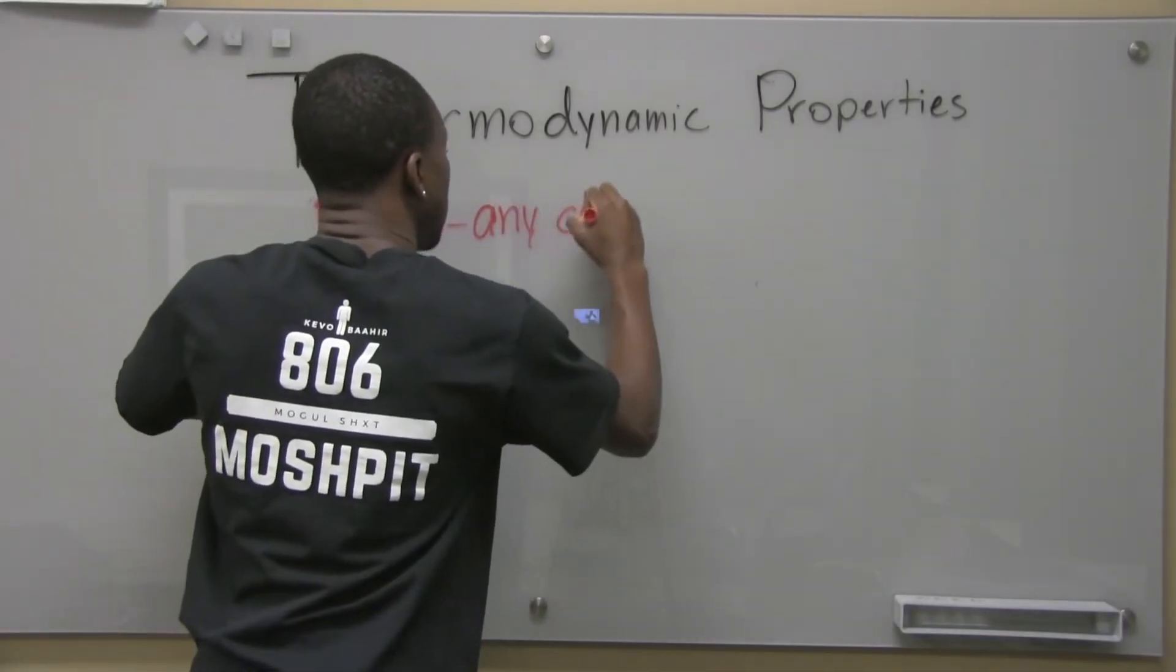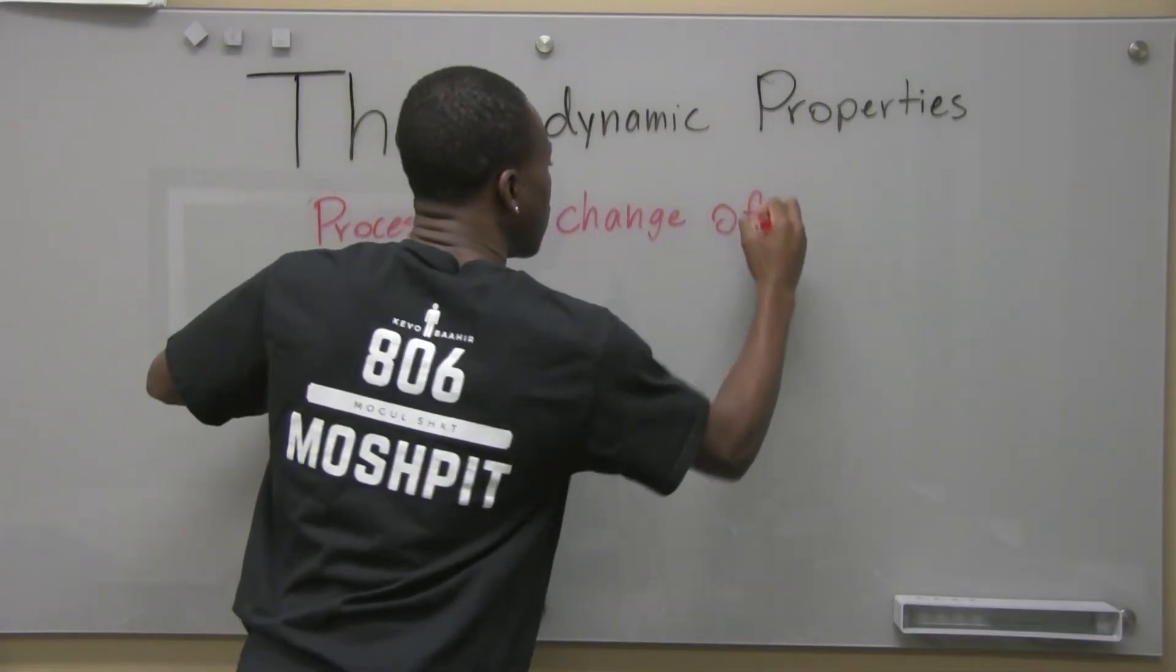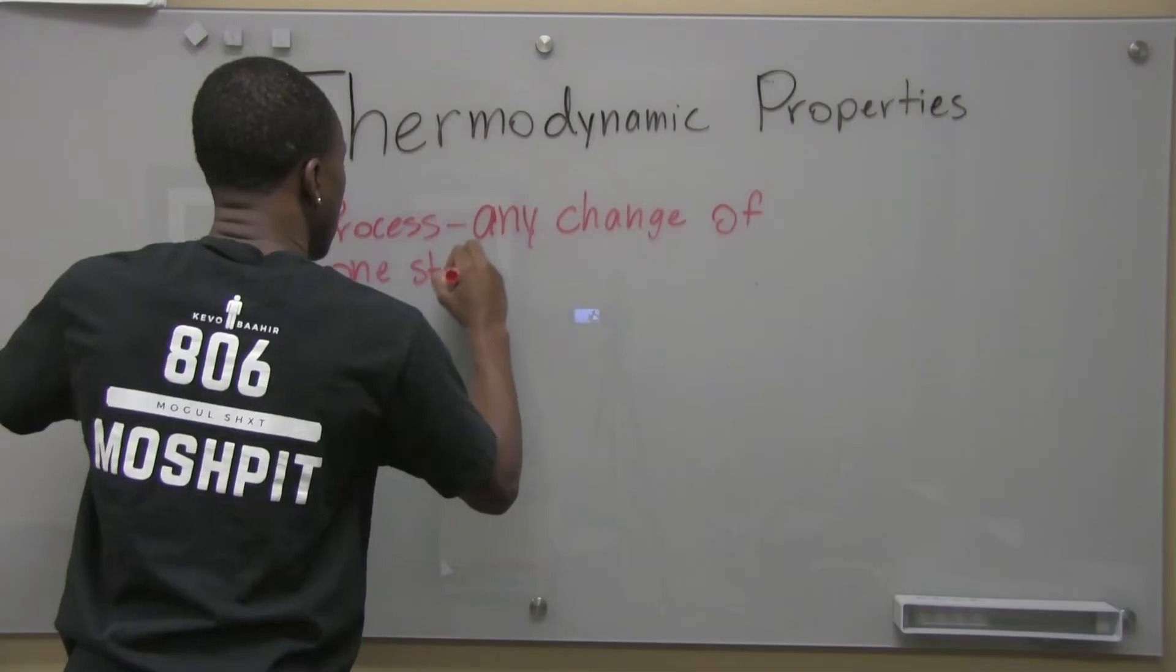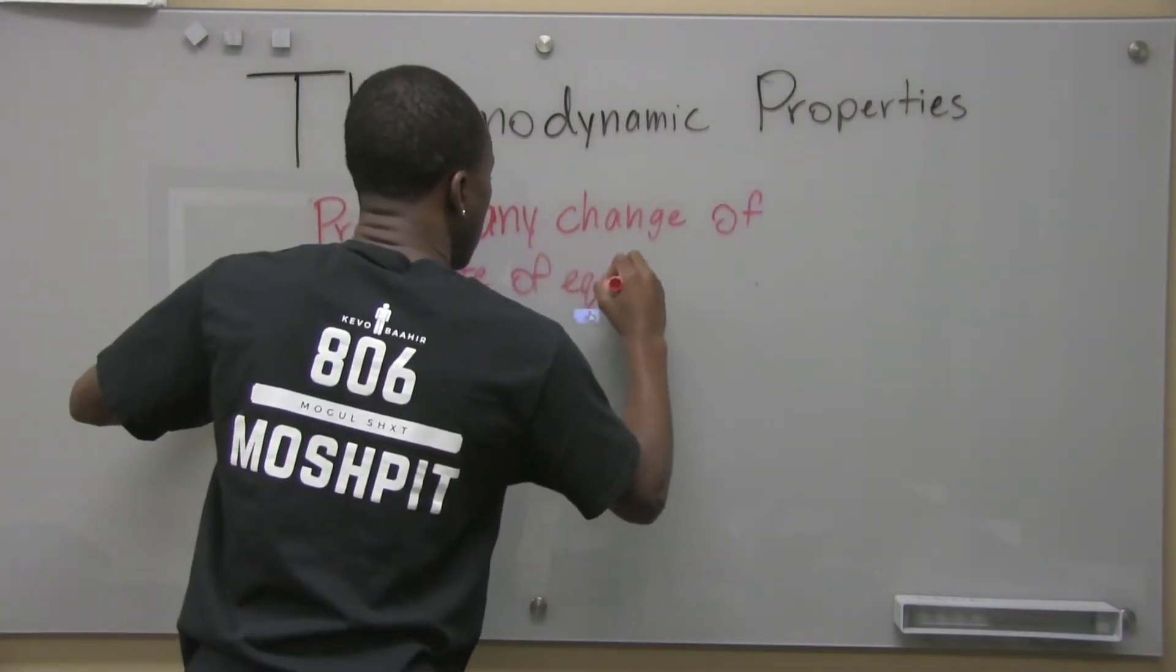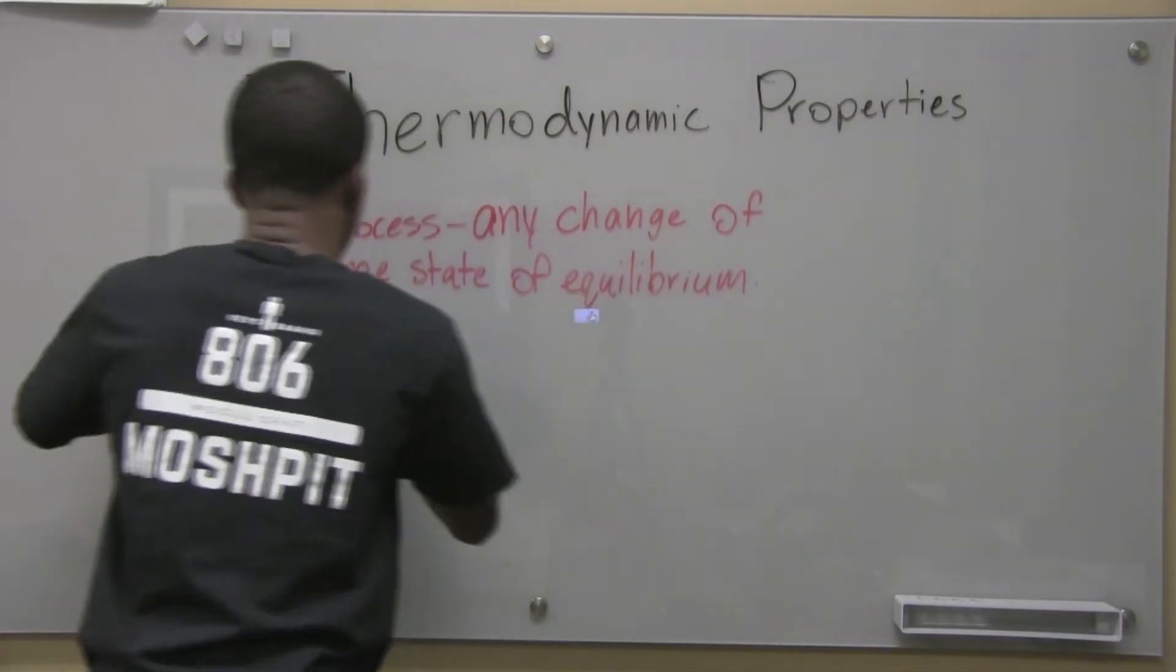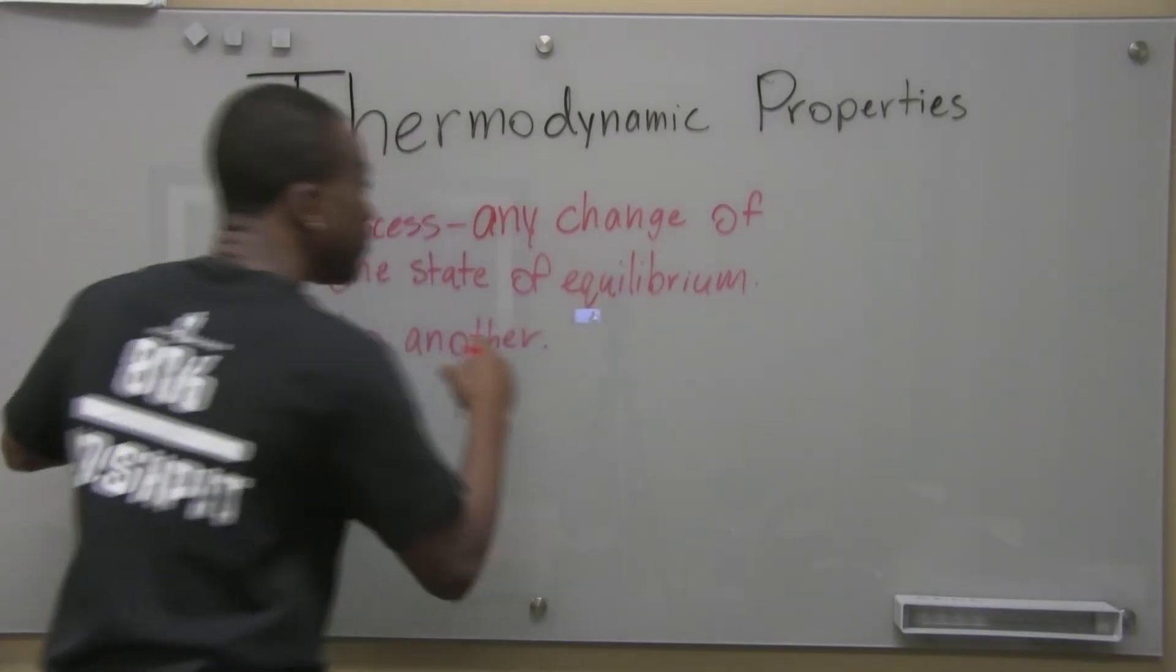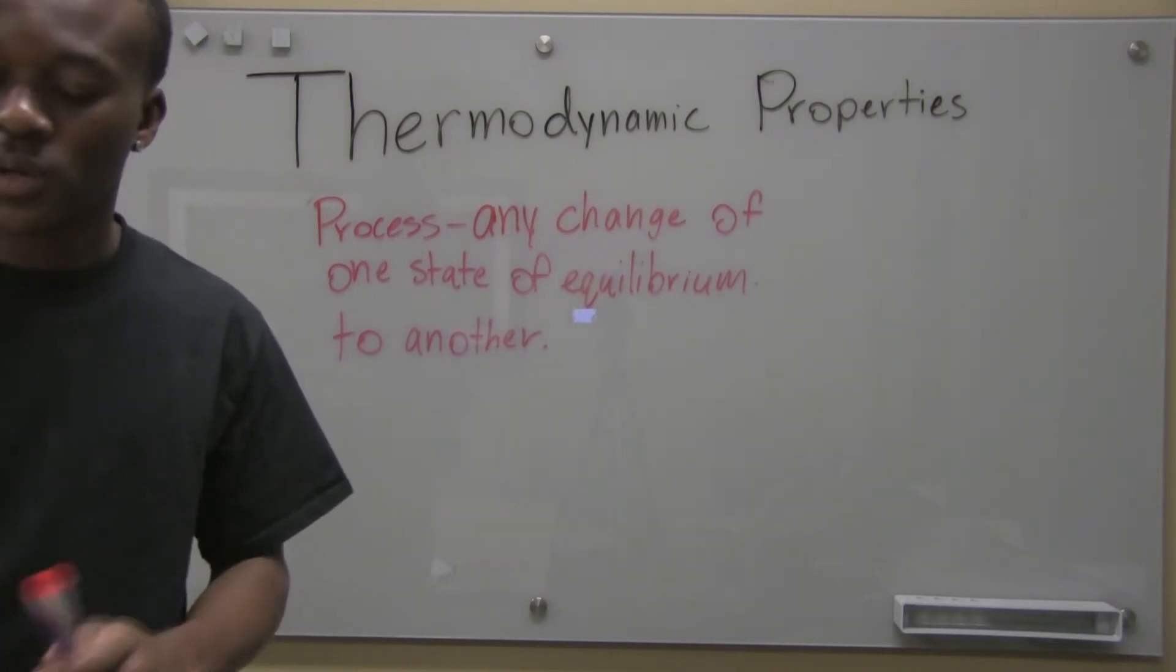A process is any change from one state of equilibrium to another. That's what we consider a process. Any change of one state of equilibrium to another.